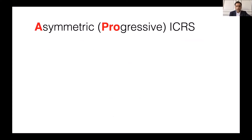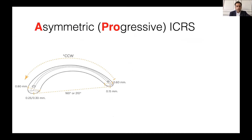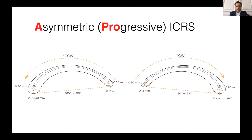We now have the last generation of asymmetric or progressive intracorneal ring segment. This last edition is very special because it's a double progression with width and thickness. So we have different thickness, different length, and different diameter.